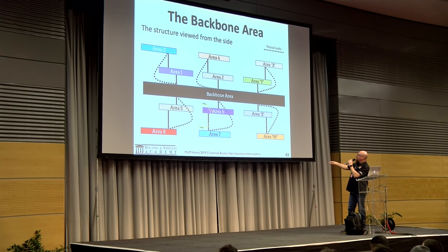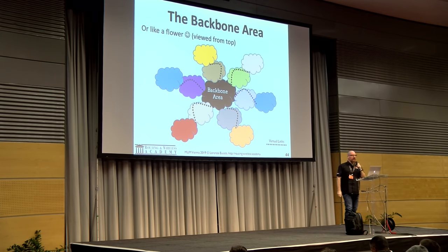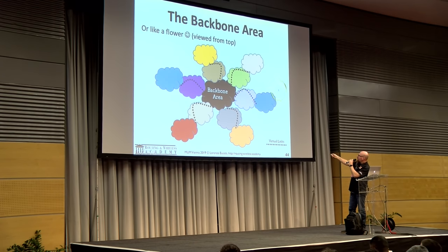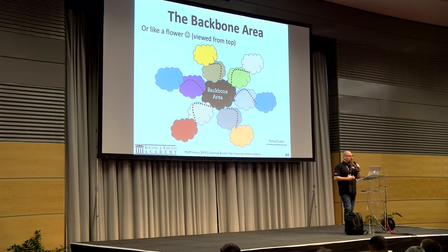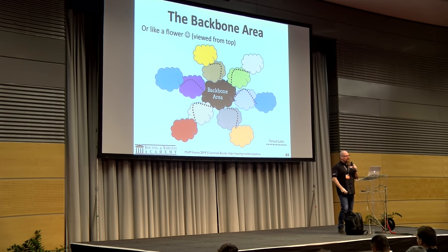Looking at the structure from the side and from the top, it resembles a flower: the backbone area in the center, main areas connected directly to it, and other areas connected through one virtual link. This is the typical logical shape of OSPF areas — two rows of petals attached to the central backbone core. Think about this when designing your OSPF network, because trying to build weird structures connecting areas following city or region topology may not work well.